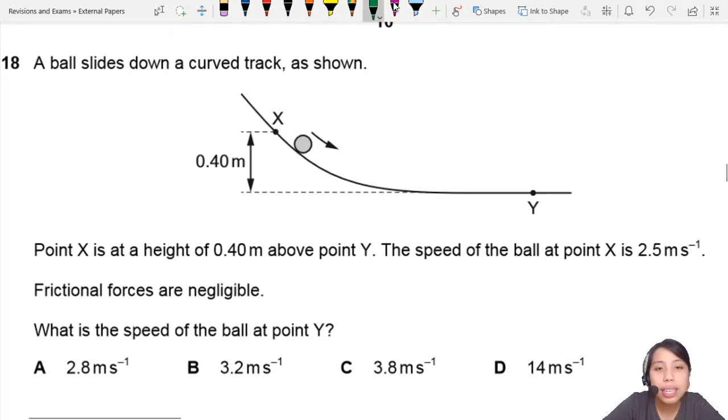Frictional forces are negligible, means I don't have to worry about work done against friction or frictional forces, none of that. What is the speed of the ball at point Y? So eventually this ball will roll down here. But how do you find the speed?